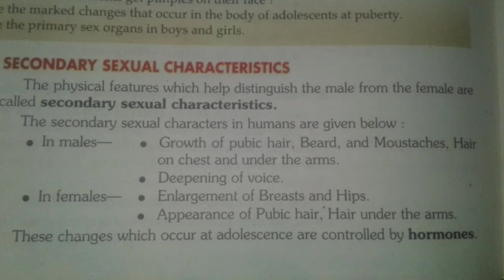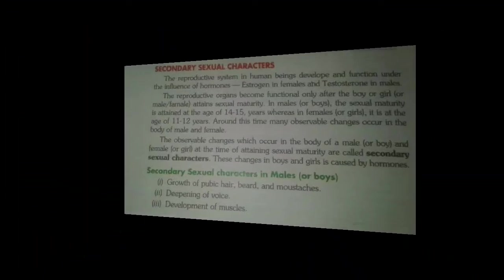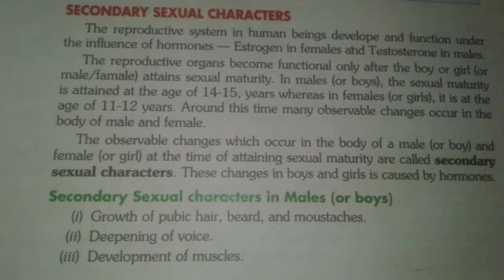The ovary and testes secrete estrogen and testosterone, which are the sexual hormones. Estrogen is the sexual hormone in females, and testosterone in males, and these hormones are responsible for showing the secondary sexual characters in individuals. The reproductive organs become functional only after the body of girls and boys attends sexual maturity.